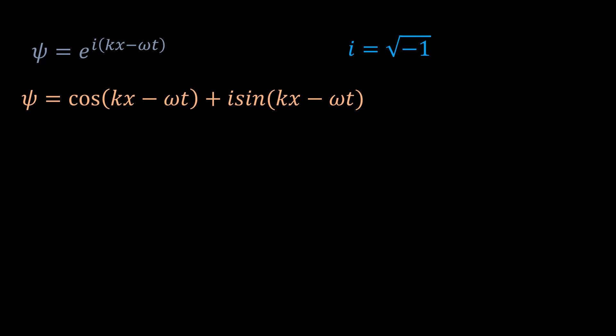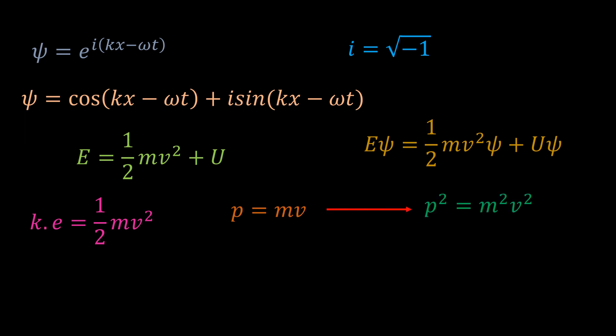He then applied this wave function to both sides of the following classical energy equation. It is rather more convenient to express the kinetic energy in terms of momentum. Kinetic energy is half mv squared, and linear momentum is mass times velocity. If we square the momentum, we have p squared equal to m squared v squared. If we divide this by 2m, we get half mv squared, which is the kinetic energy. So we can write kinetic energy equal to momentum squared over 2m.